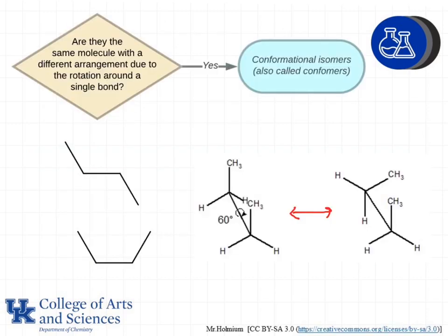After we've established that a pair of molecules are isomers, the next question is: are they the same molecule with a different arrangement due to rotation around a single bond? We will see later that double bonds and triple bonds prohibit rotation within a molecule, but single bonds allow the free rotation of atoms with respect to one another. We can show this on the left where the CH3 group on the far right is pointing down, and on the other molecule it's pointing up — there's a rotation.